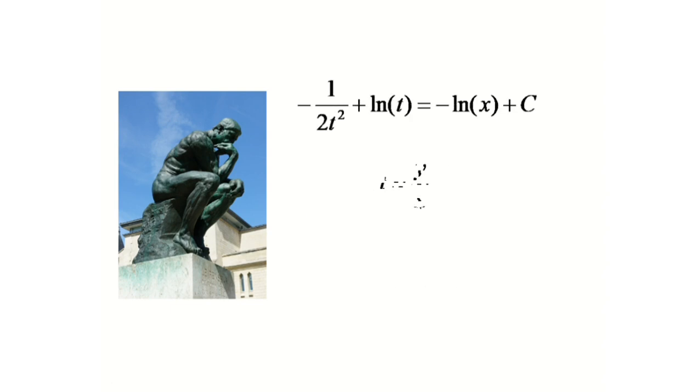And now, if we substitute t equals y by x, we will get minus x square by 2y square plus ln y equals c.